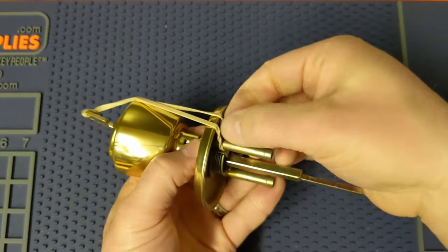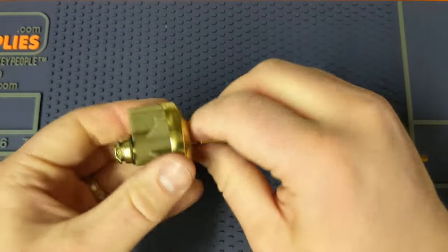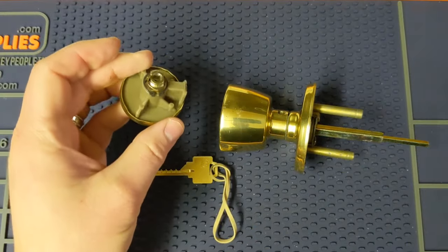Alright, so what we'll do now, go ahead and take this rubber band off. It's going to come out. At this point, you can go ahead and rekey it.